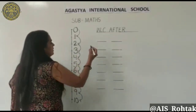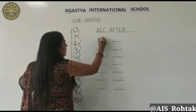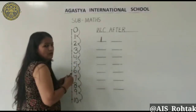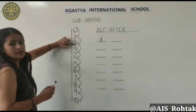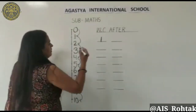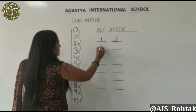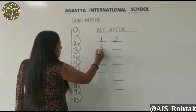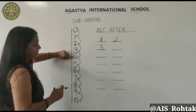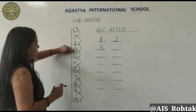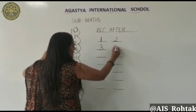Like, ab hum usse poochhenge: we write 1 here. Please tell me, what comes after 1? Look — after 1 is 2. Then write here 2. And what comes after 3? Look, what comes after 3? Kya hai 3 ke baad? 4. After 3 is 4. We write 4 here.